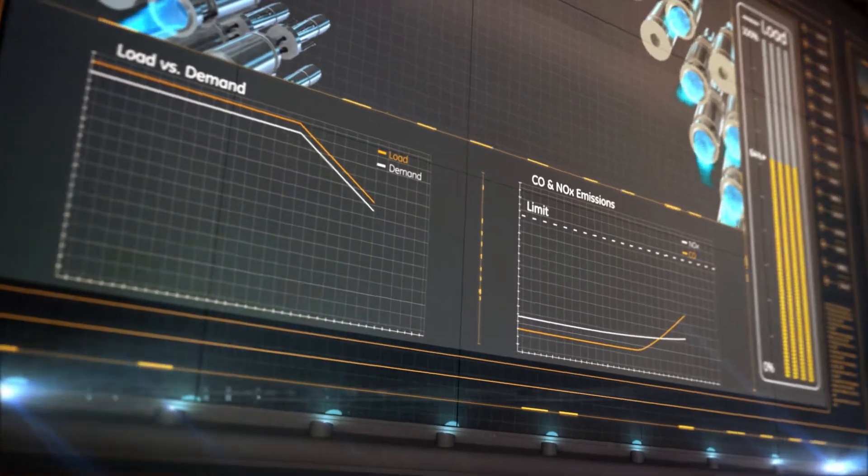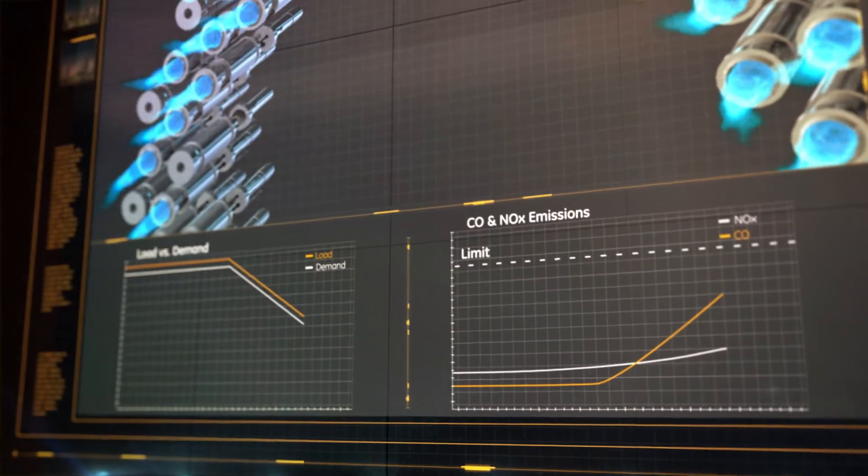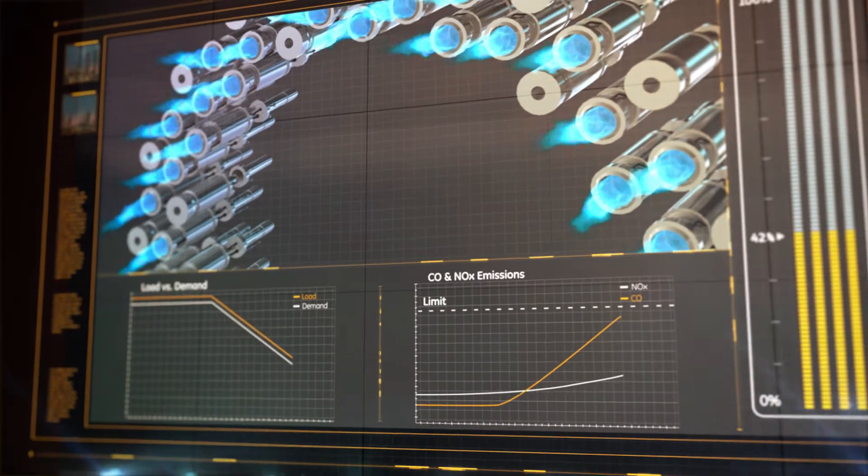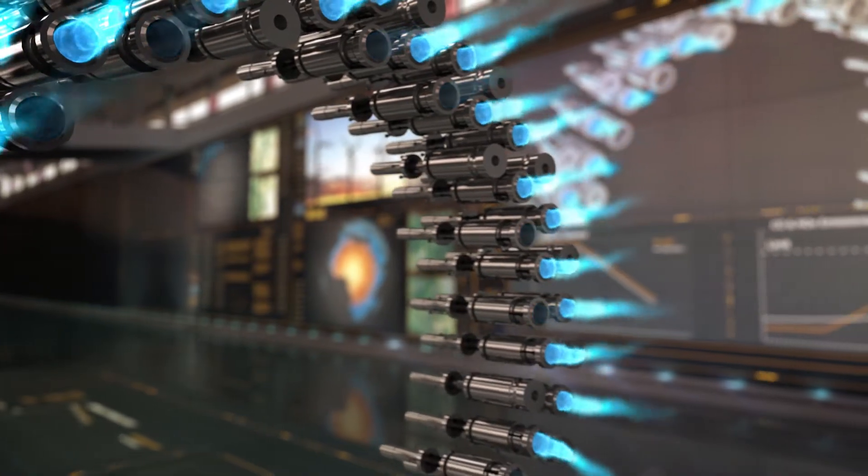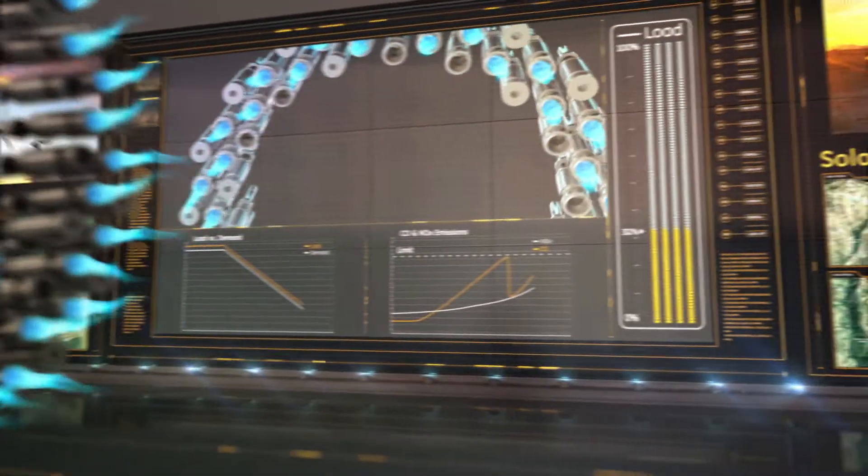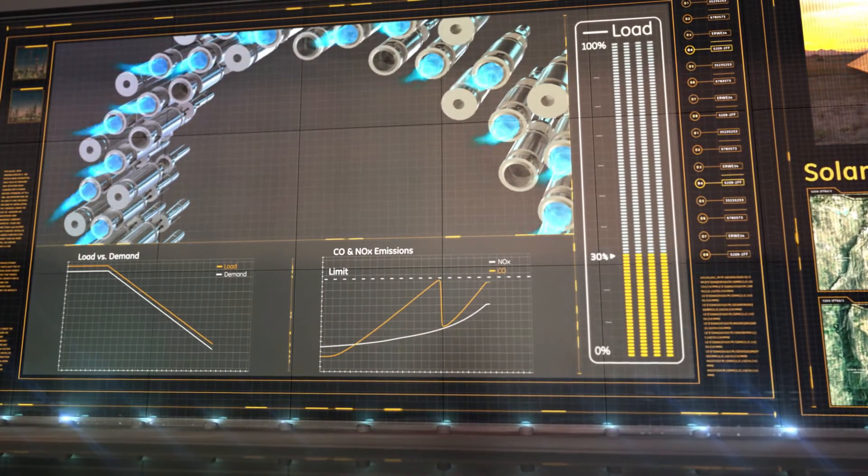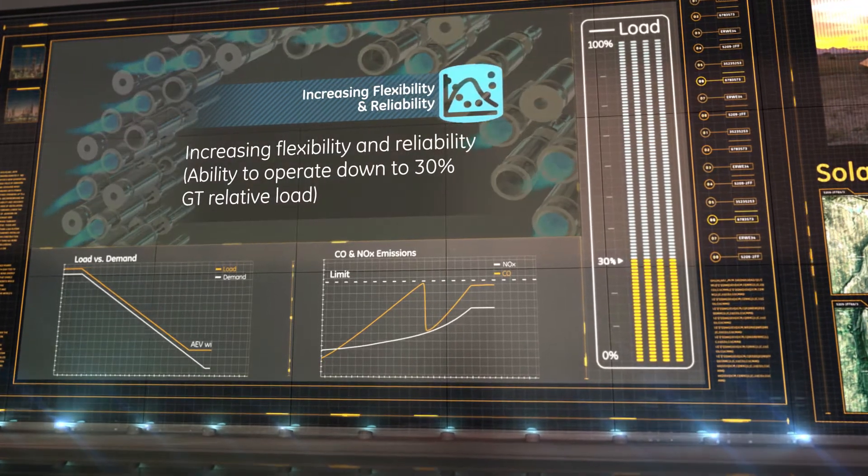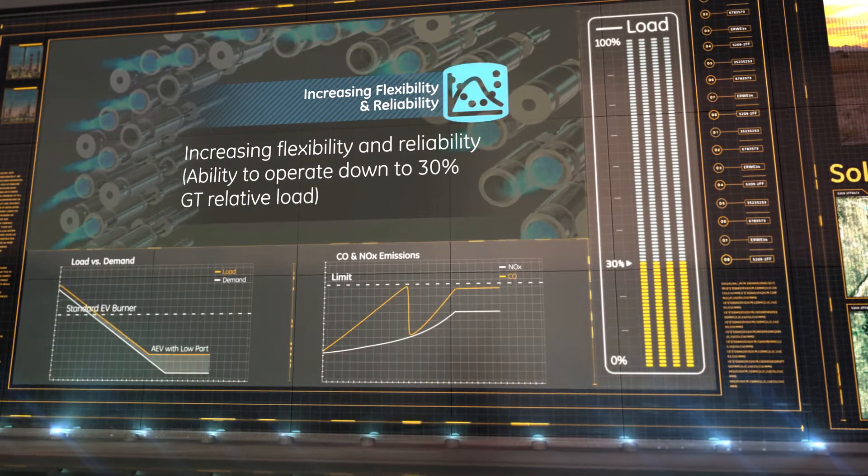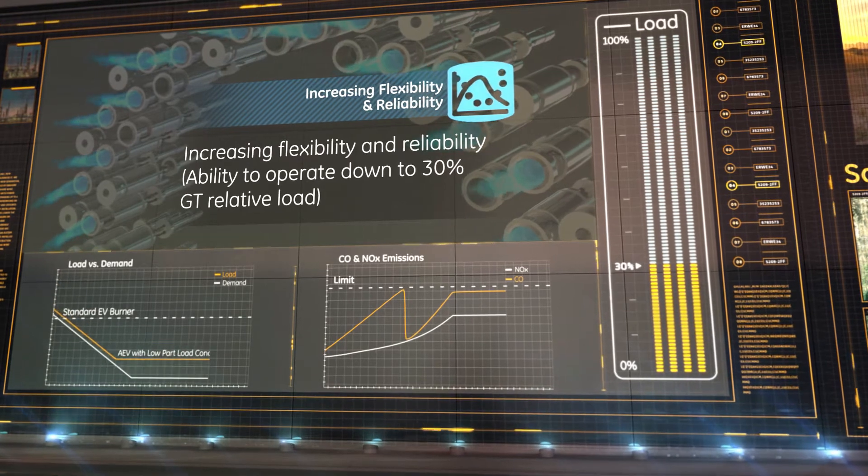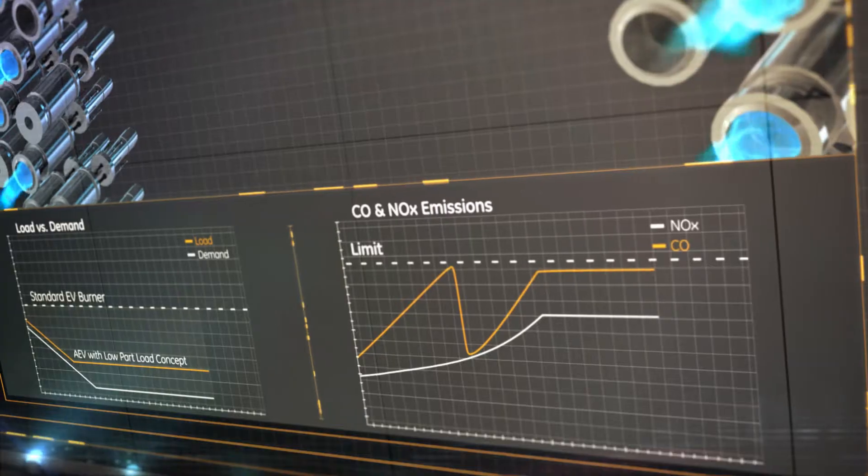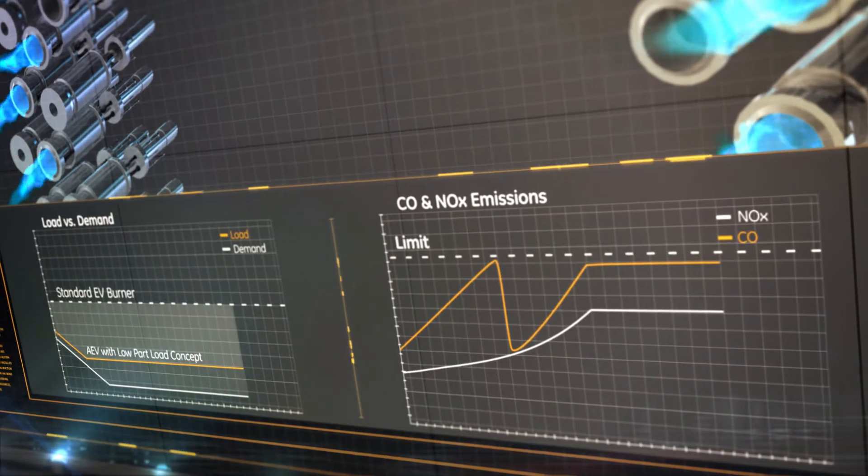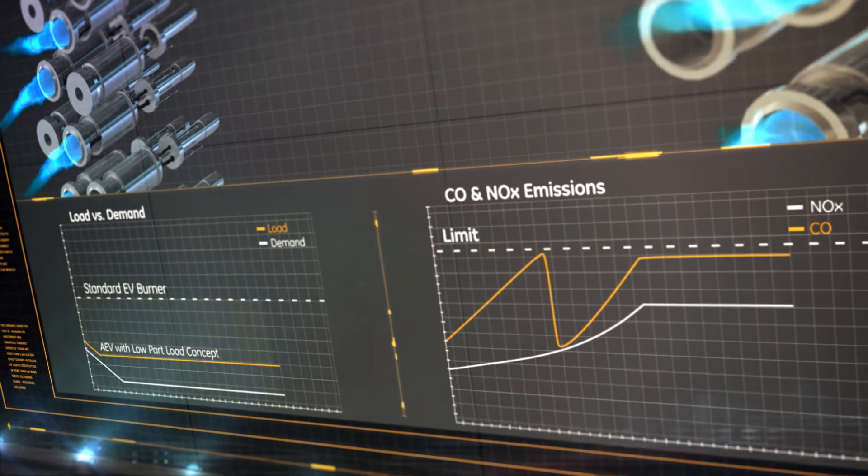With the AEV low-part load concept, as power output is reduced beyond 40% relative load, selected AEV burners are switched off to carefully control the flame temperature, allowing emission-compliant operation down to as low as 30% GT relative load. The unbalance between the power output and the power demand, potentially caused by environmental limitation, can be significantly reduced compared to the standard EV burner configuration.